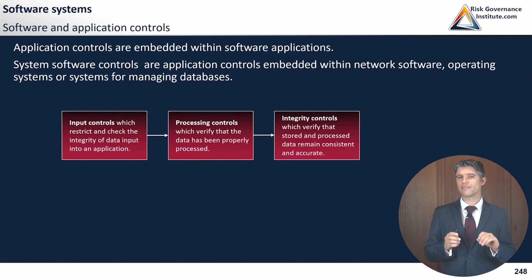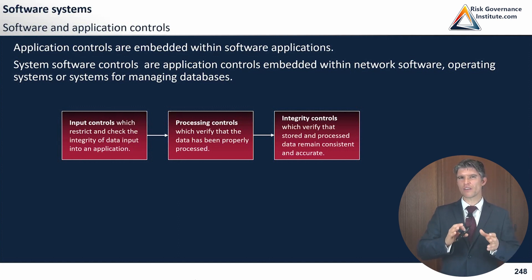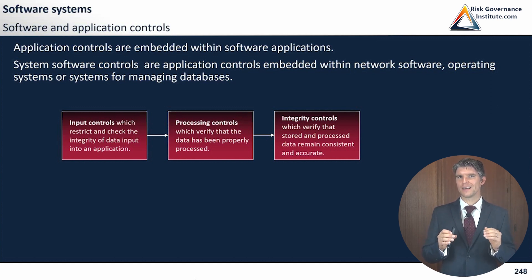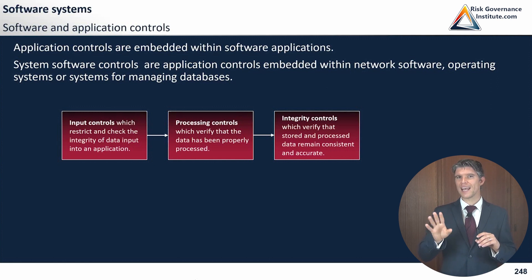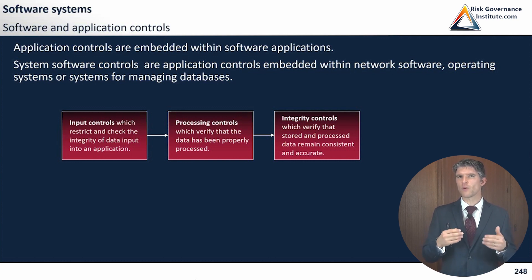Integrity controls verify that stored and processed data remains consistent and accurate. For instance, during a data transfer you might notice your outputs are corrupted, modified, or partially destroyed. You can put in a control that only confirms the communication went through if it was entirely correct — like in accounting, where your assets must equal your liabilities. If both sides of your balance sheet don't balance, you'd get an error message.